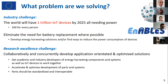Let's start with a brief presentation of the ENABLES project and the problem we are solving. The first challenge is the industry challenge: the world will have one trillion IoT devices by 2025, all needing power — around 100 IoT devices for every person. We need to eliminate the need for battery replacements where possible, which means developing energy harvesting solutions and finding ways to reduce the power consumption of devices.